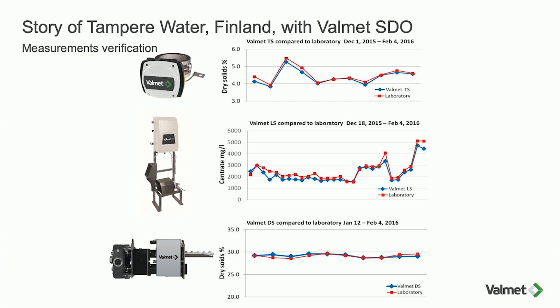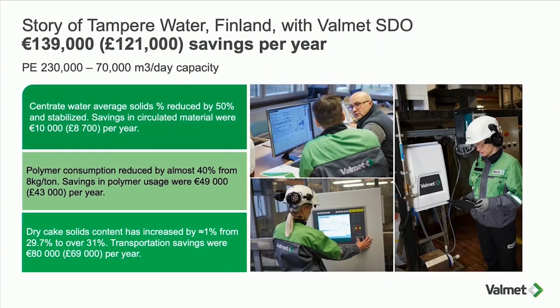Because the measurements performed well, we moved to the next stage: implementing the multi-variable controls. This was a full SDO system — all measurements and controls — and they achieved an annual saving of around £121,000 in the first year. In the second year they increased that figure further as they learned how to run the centrifuge better. Savings came from reduced solids in the centrate going back to the head of works, reduced polymer consumption by around 40%, and the biggest saving came from transport costs where they improved dry cake by about one to one-and-a-half percentage points. Our ROI calculation had actually been quite conservative — they achieved much better savings than anticipated.